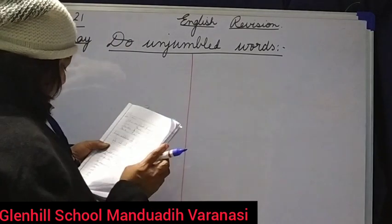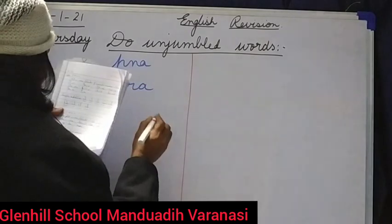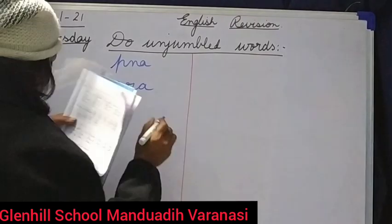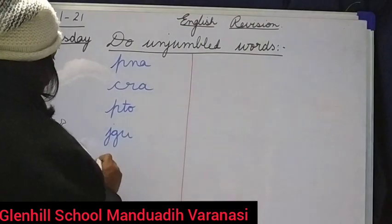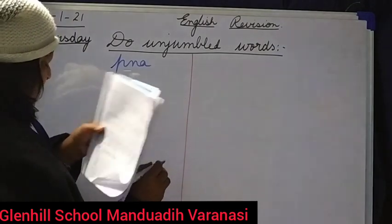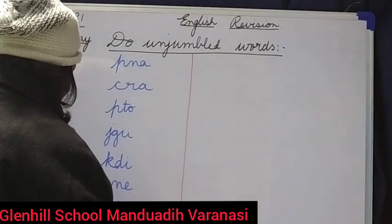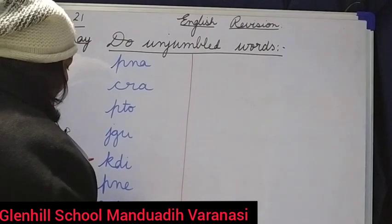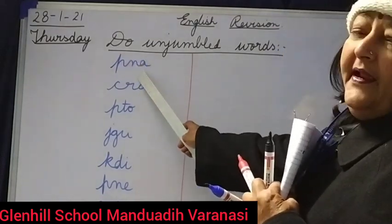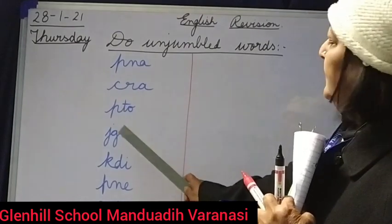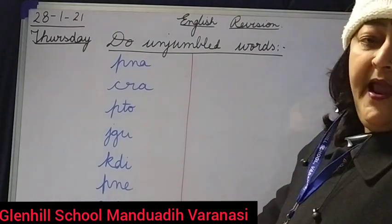Are you all ready? Here are seven words. P, N, A — C, R, A — P, T, O — J, G, U — K, D, I — P, N, E — M, N, A. There are seven words. You have to correct these words and write them. You all know all these spellings and you know how to correct them.